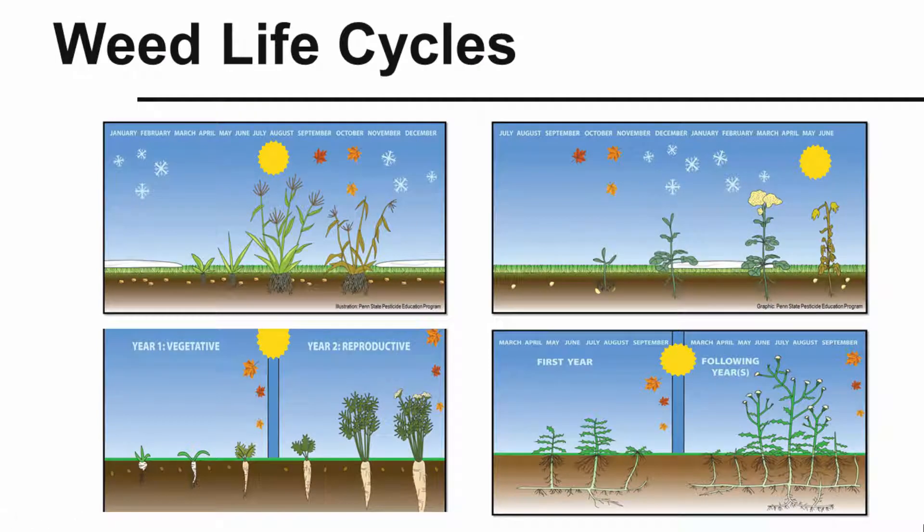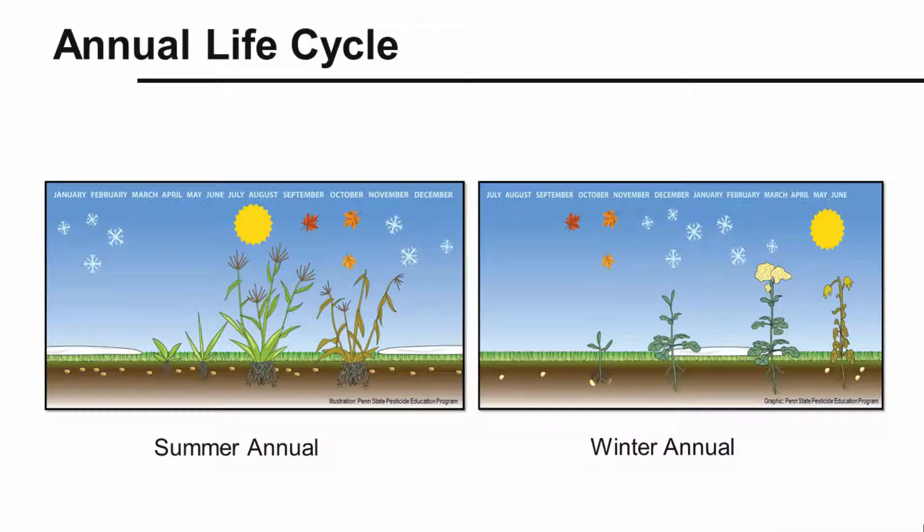When we try to control weeds, it's very important to understand the life cycle of the weed we're trying to control. In this video, we're going to take a look at the life cycles of weeds and point out when they're vulnerable and when they are not. There are actually three different life stages we're going to look at, one of which we break into two separate parts. We're going to start with the annual life cycle.